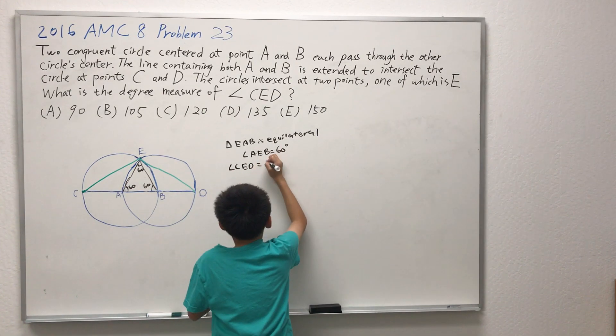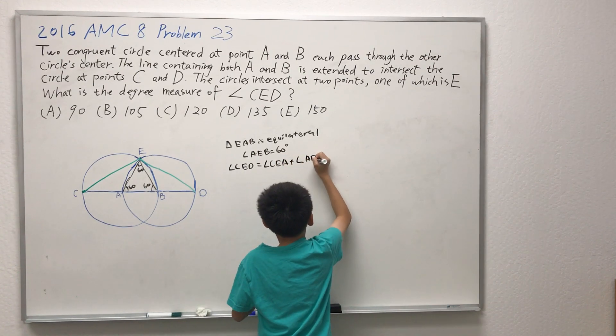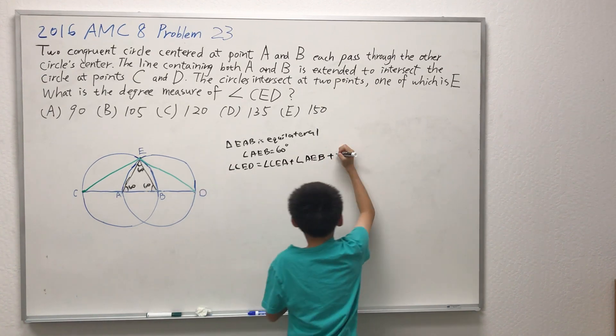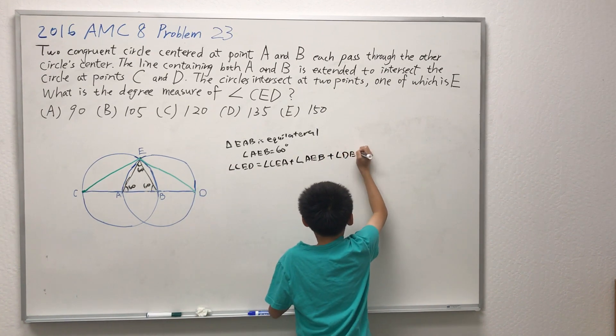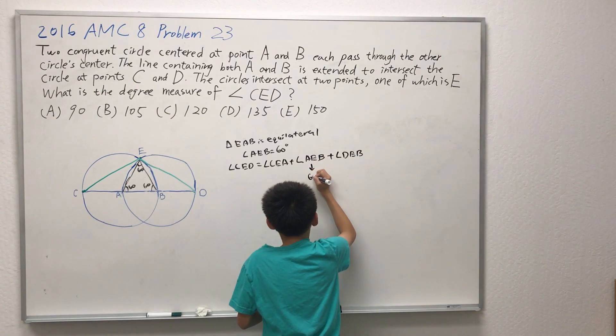All we need to find is angle CEA plus angle AEB plus angle DEB. We have already found that AEB is 60 degrees.